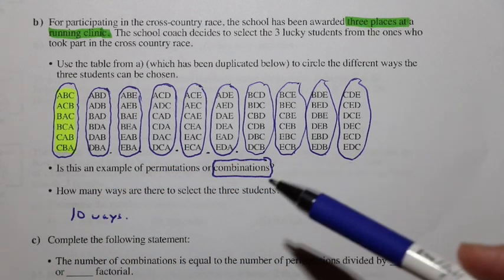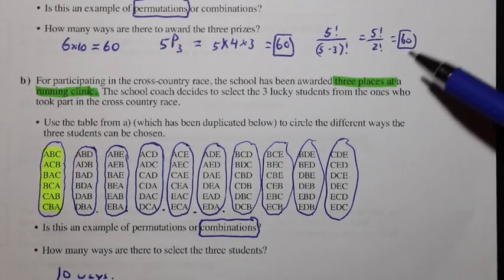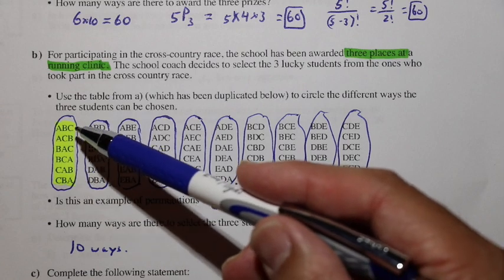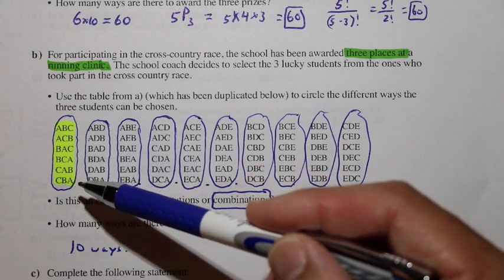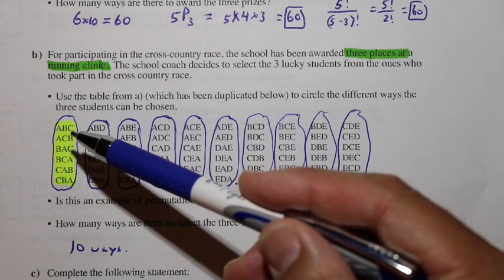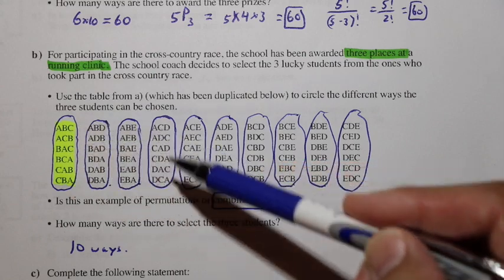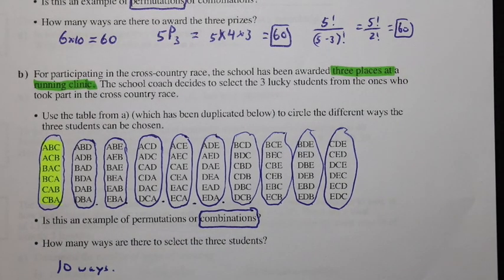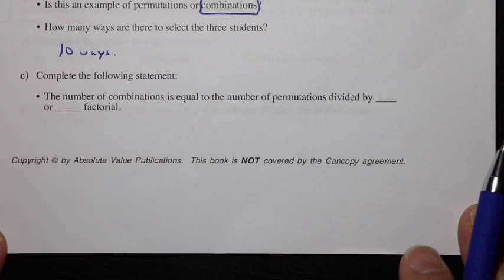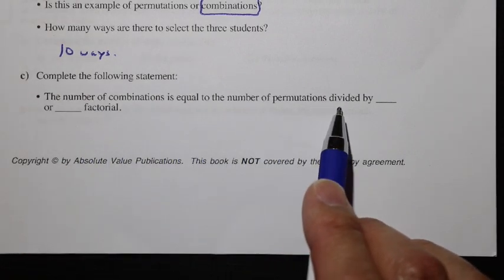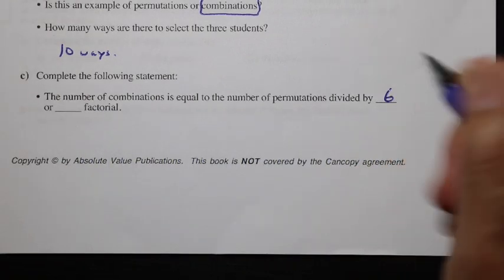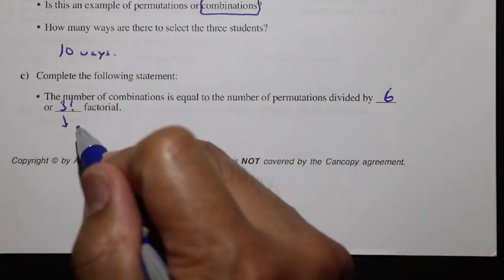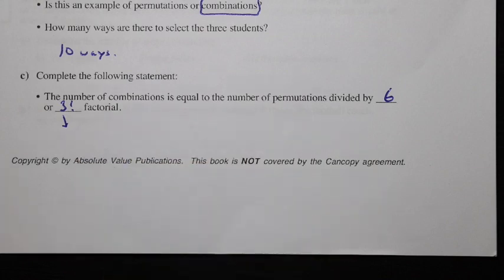Looking at the difference between permutations and combinations, the combinations have a repetition happening of six times — or in other words, 3 factorial times the number of combinations equals the number of permutations. So the number of combinations equals the number of permutations divided by six, or 3 factorial. That three is important because it's the number that we selected.